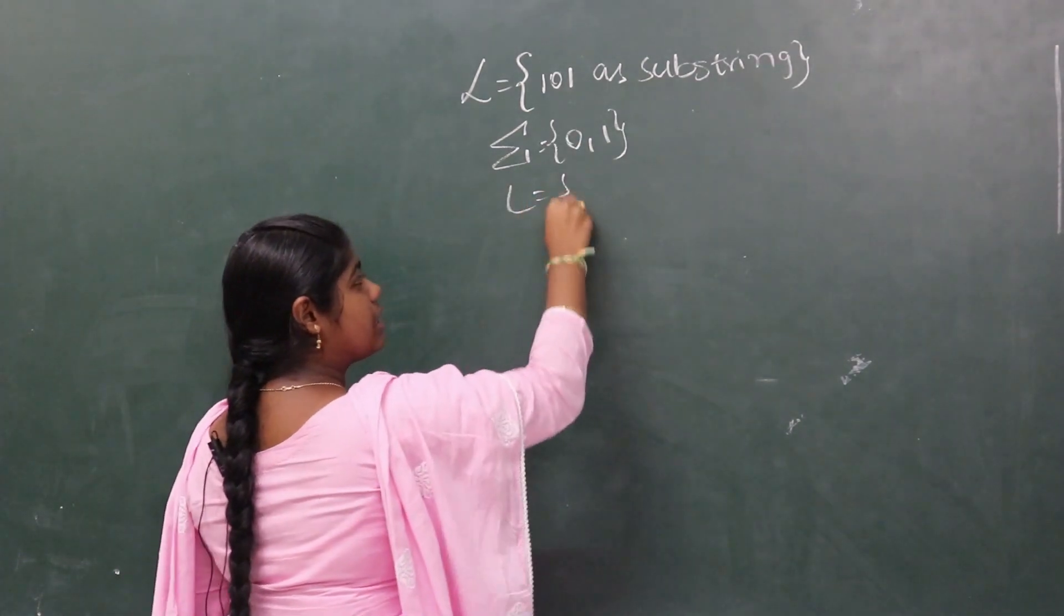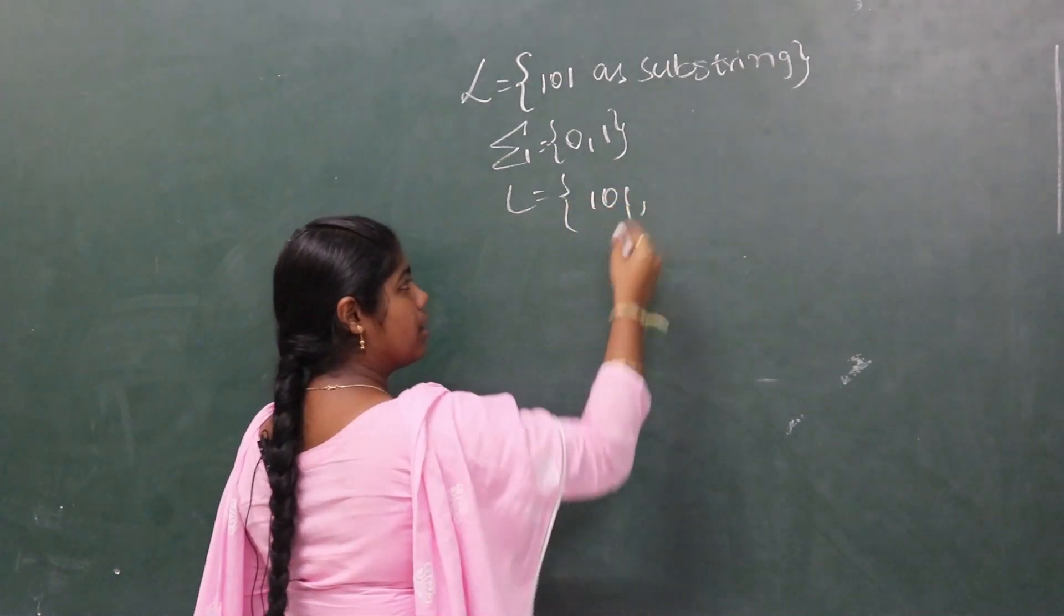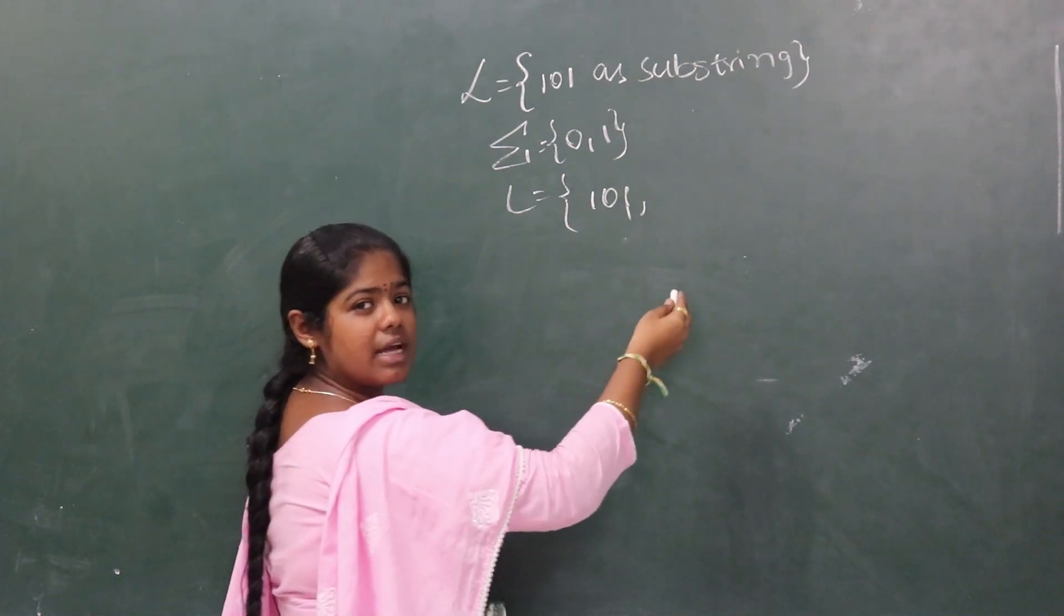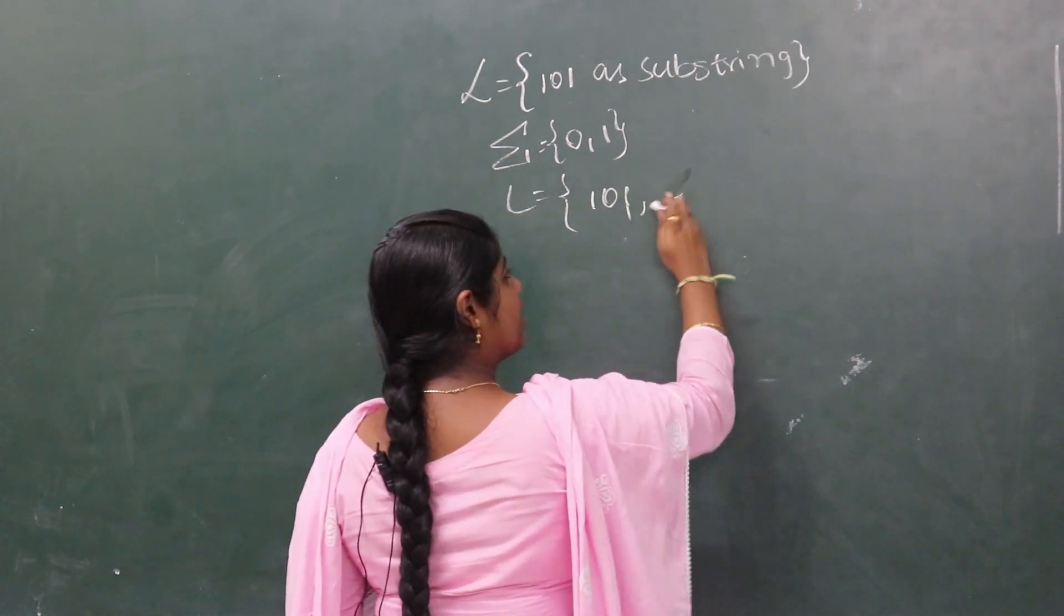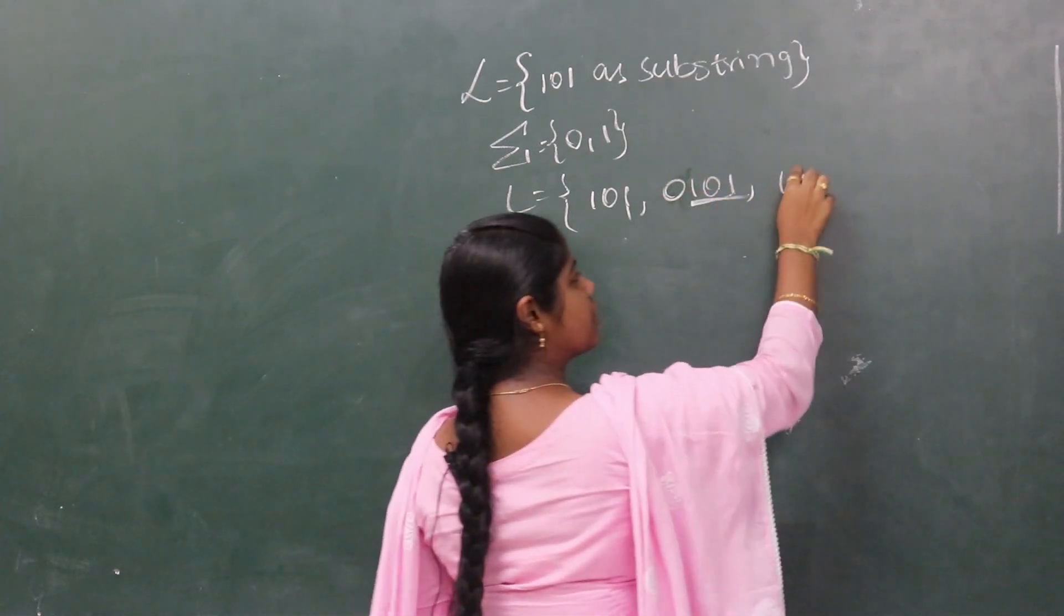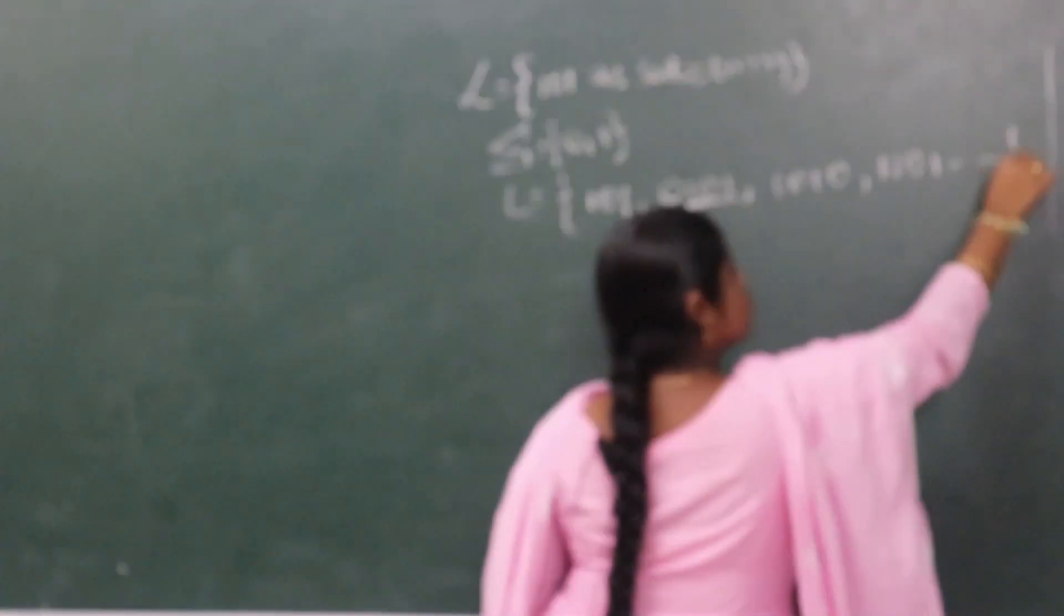Because 101 is a substring, we can consider it anywhere in the string. For example, 0,1,0,1 accepts 101 as substring. Similarly, 1,0,1,0,1,1,0,1 and so on.